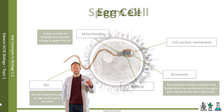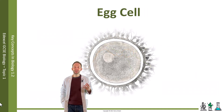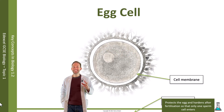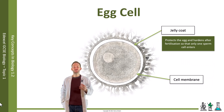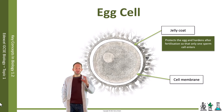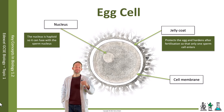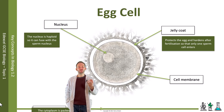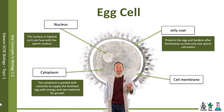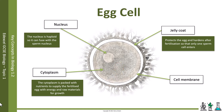The egg cell has a cell membrane. It's a very large cell. It's got something called a jelly coat, which protects the egg and hardens after fertilisation so only one sperm can enter. It has a nucleus — the haploid nucleus — which is going to fuse with the sperm when the sperm gets inside. And then cytoplasm, which is packed with nutrients to supply that fertilised egg with energy and raw materials for growth.